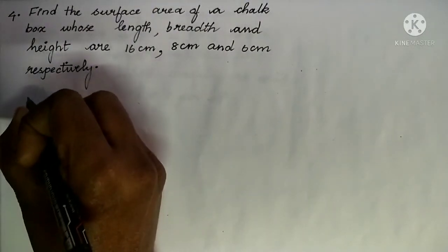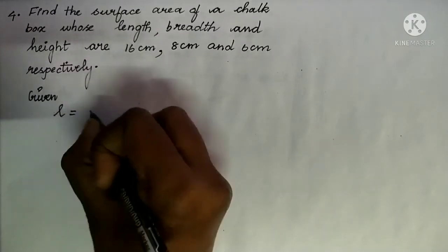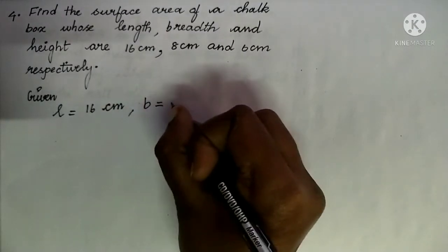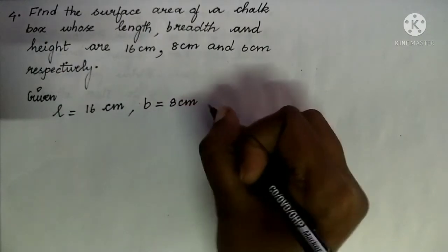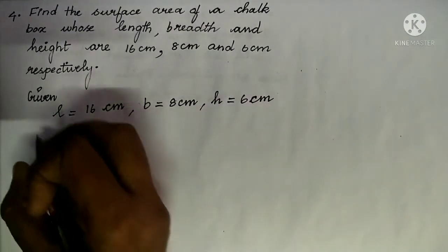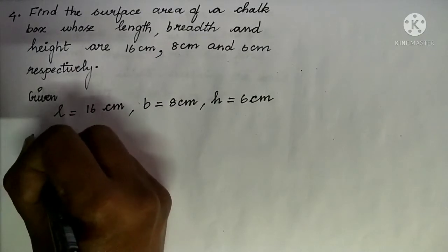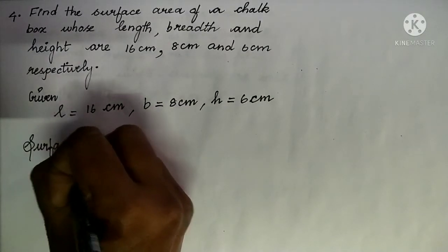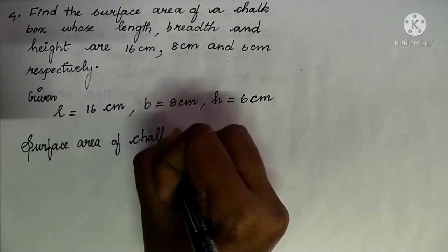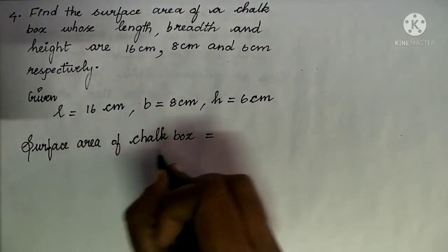So we will write the given values first. Given: length is equal to 16 cm, breadth is equal to 8 cm, and height is equal to 6 cm. So we are going to find the surface area of the chalk box, that is the TSA of a cuboid.